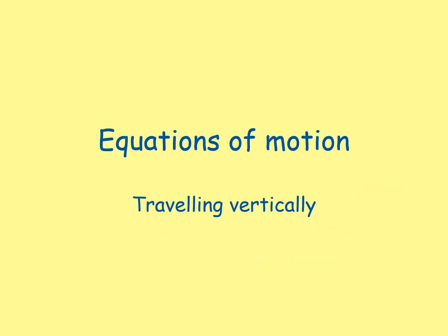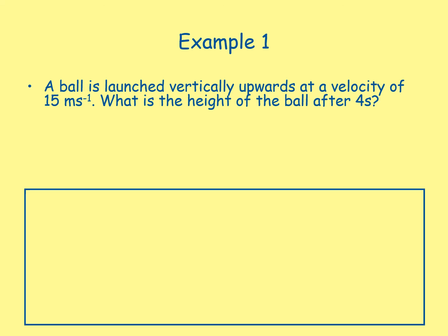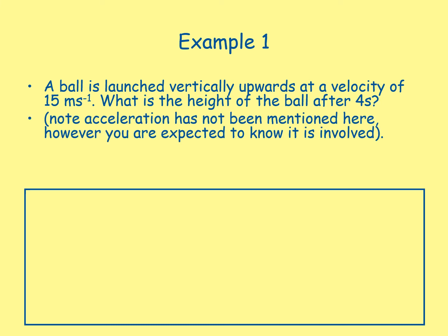Equations of motion travelling vertically. When an object is launched vertically in one dimension with no horizontal travel, acceleration due to gravity must be considered. On Earth, a = 9.8 m/s² and this always acts downwards. Therefore, if an object is launched vertically upwards, we have two directions — both positive and negative. Example 1: A ball is launched vertically upwards at a velocity of 15 metres per second. What is the height of the ball after 4 seconds? Although acceleration has not been mentioned, you are expected to know it is involved. Choose directions: upwards is positive, downwards is negative. Known values: u = 15 m/s, t = 4 s.